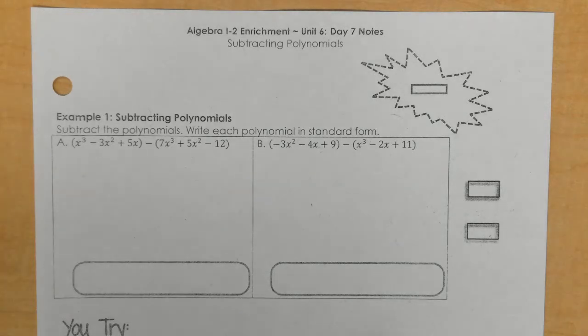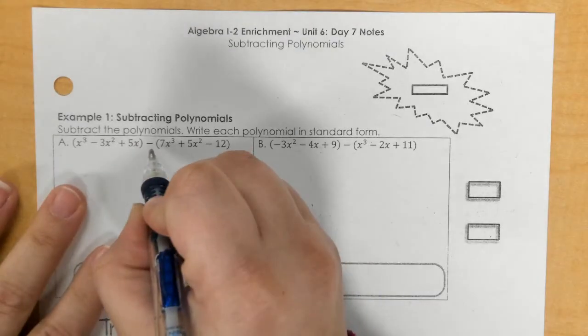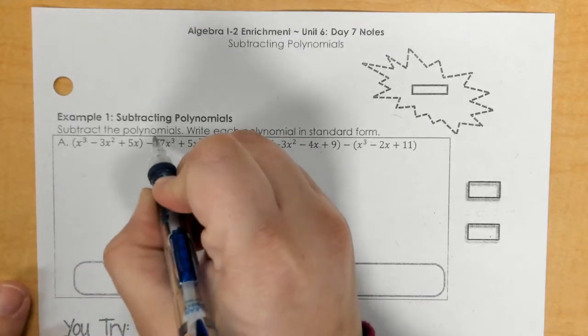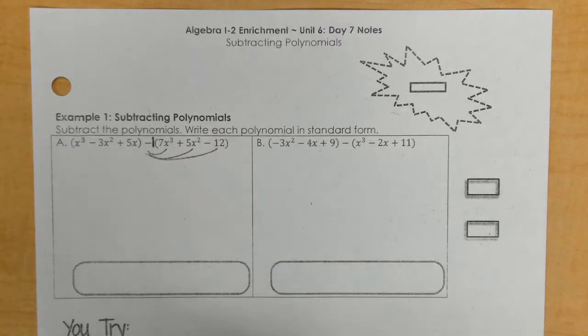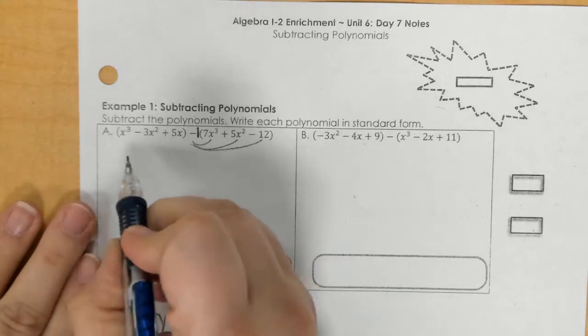You are combining like terms, but you have to think of this as like a negative 1 right here in between the parentheses. And then you have to distribute that negative. Well, if you distribute a negative, that just means change your signs.